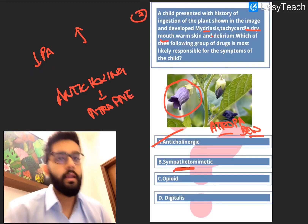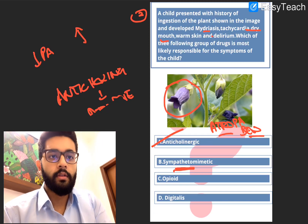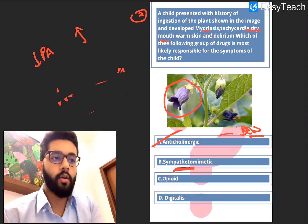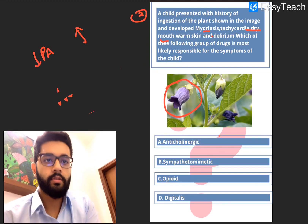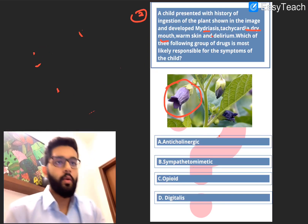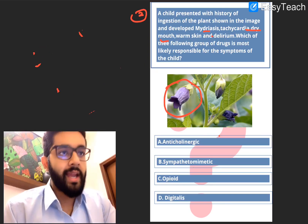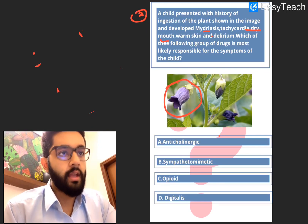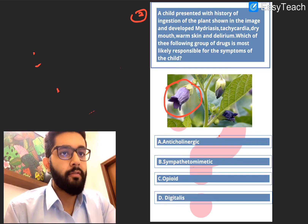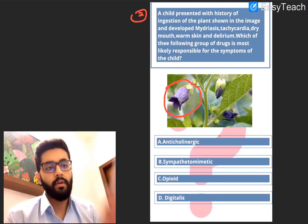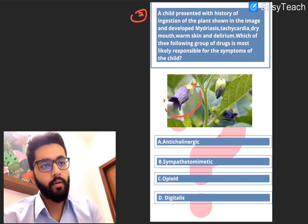The second question: a child presented with a history of ingestion of a plant shown in the image and developed mydriasis, tachycardia, dry mouth, warm skin, and delirium. Which of the following drugs could be responsible for these symptoms? Pause, read the question, and think about it.